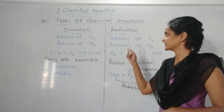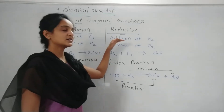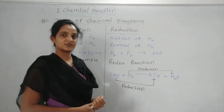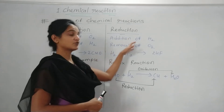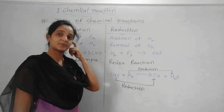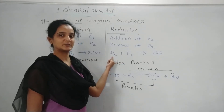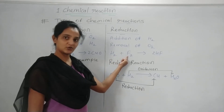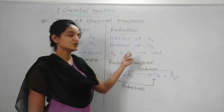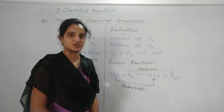Similarly, reduction reaction is also defined in two ways: either there is an addition of hydrogen, or there is a removal of oxygen — then it is known as the reduction reaction. For example, a molecule of fluorine reacts with a molecule of hydrogen to produce hydrogen fluoride. Here you can see there is an addition of hydrogen to the fluorine, that's why this reaction is called the reduction reaction.